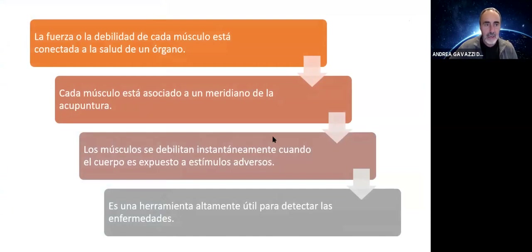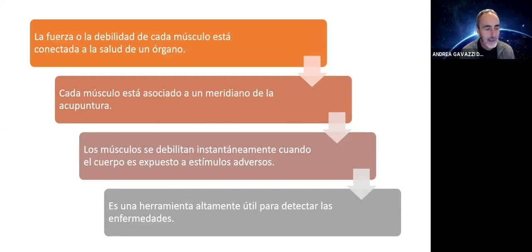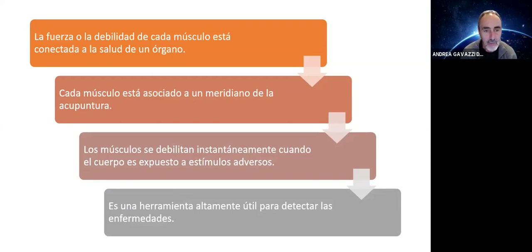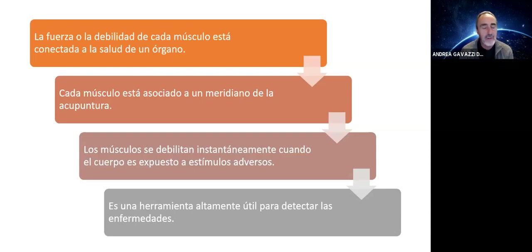Con el test de kinesiología, la fuerza o la debilidad de cada músculo: normalmente se usa más el deltoide, pero existe la rueda de los 14 músculos principales. Se utilizan 14 músculos si uno quiere hacer una kinesiología más clásica, más al estilo antiguo. Yo estudié así en un primer curso, pero me gusta más el Arm Reflex que aprendí con Antonio Sala. La rueda de los 14 elementos es un poquito más complicada y a veces no se puede hacer a todos los pacientes; el Arm Reflex es más sencillo.